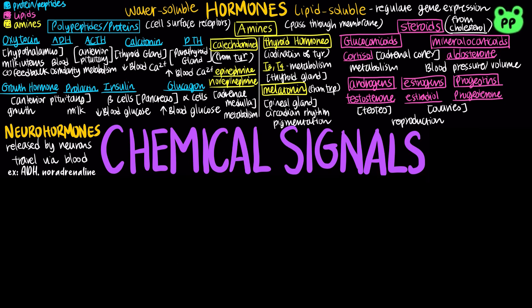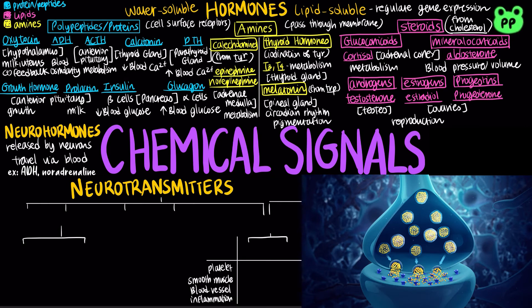The third type of chemical signals are neurotransmitters, which are released by neurons at synapses and diffuse a short distance to bind to receptors on the target cell. There are five main classes of neurotransmitters. Acetylcholine is excitatory to the neuromuscular junction.